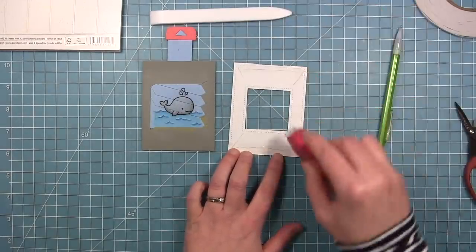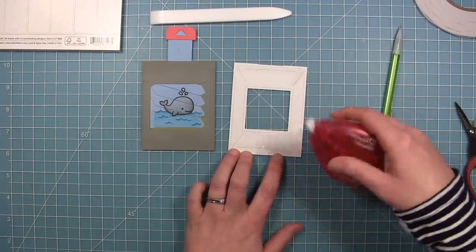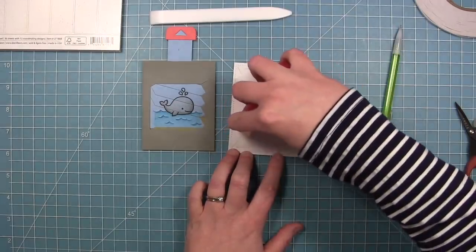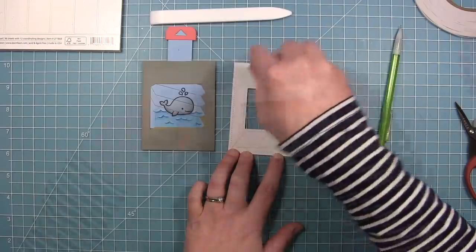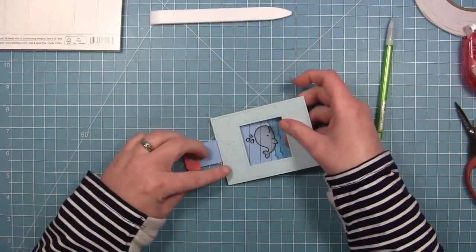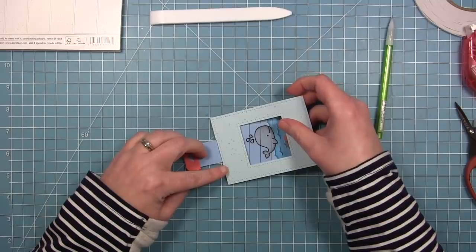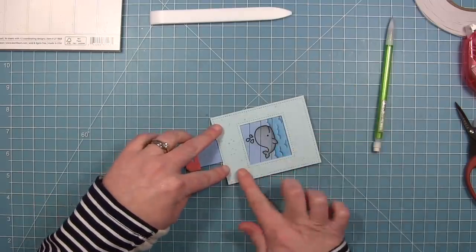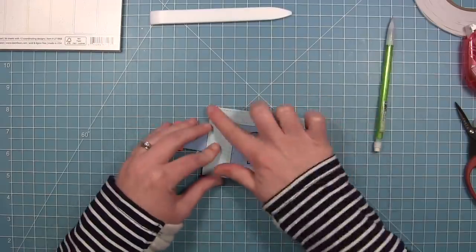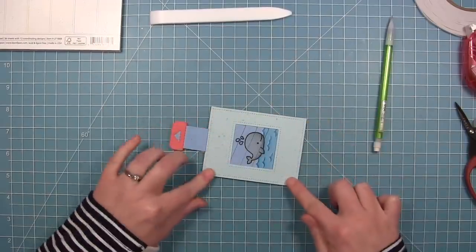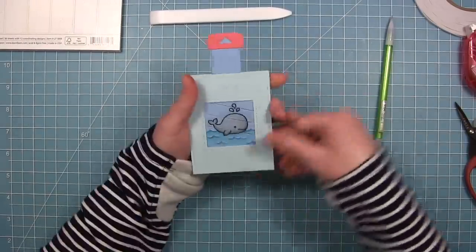You can line up that sort of divot in the top with the slot. And now you've got a nice finished panel framing your scene.